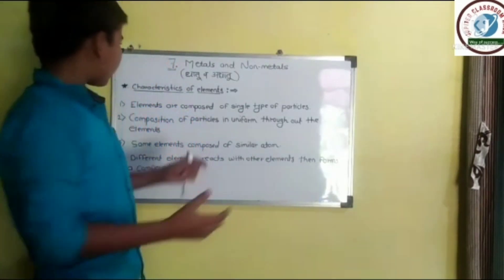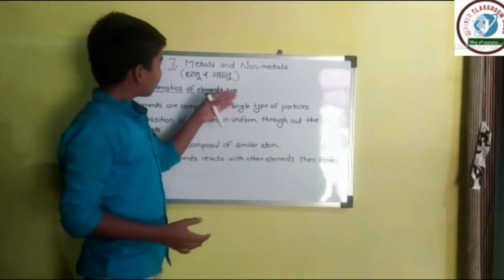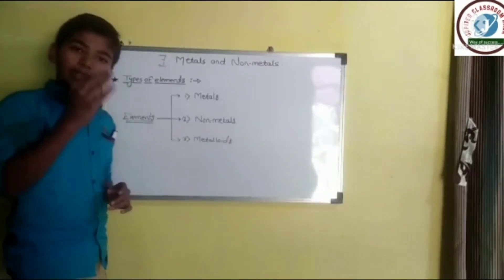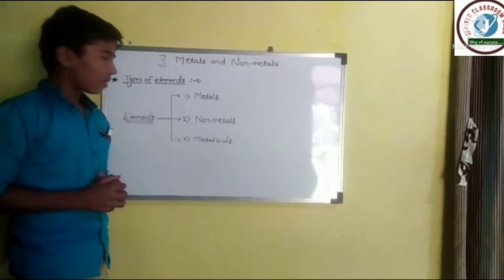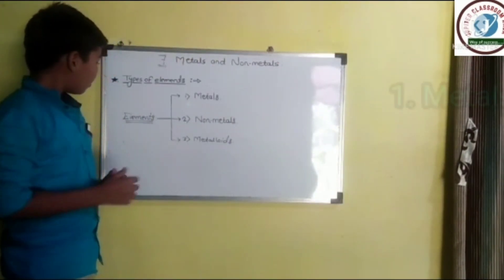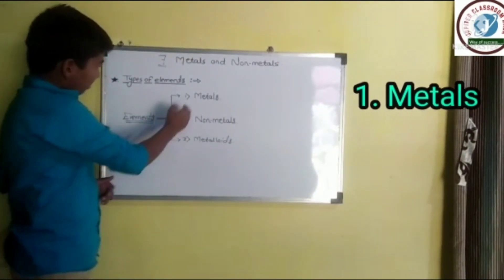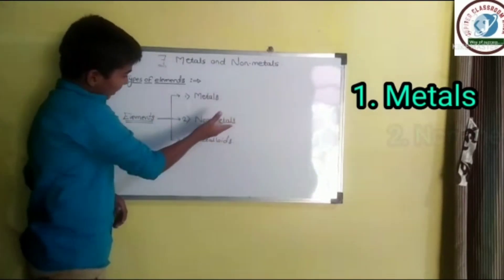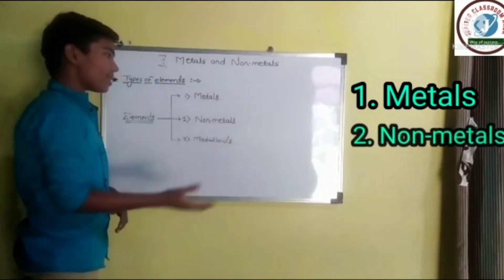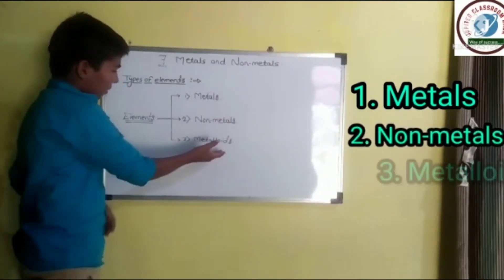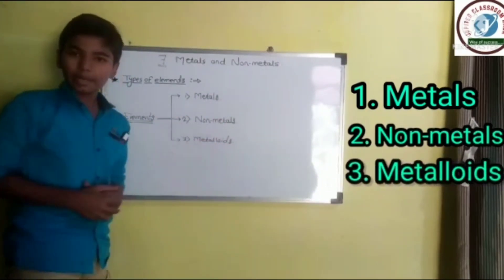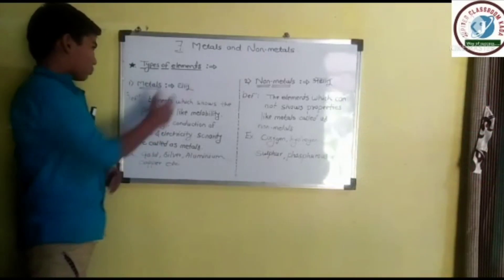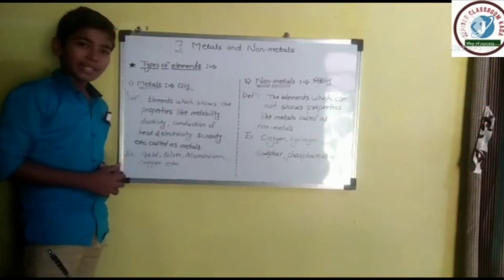Next point is types of elements. Generally, elements are classified into three types. The first type is metals, the second type is non-metals, and the third type is metalloids.